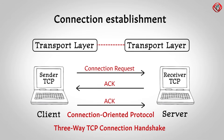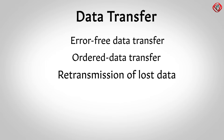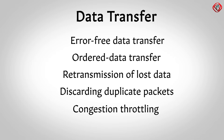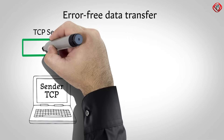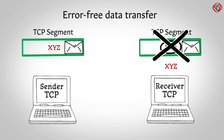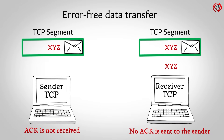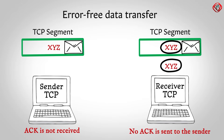Once the connection is established, the next phase is data transfer. During data transfer, TCP offers some key features which UDP does not provide, including Error-Free Data Transfer, Ordered Data Transfer, Retransmission of Lost Data, Discarding Duplicate Packets, and Congestion Throttling. Error-Free Data Transfer is provided by using the Checksum field. The sender calculates and enters a value in this field. At the receiving end, the receiver calculates the checksum value. If it does not match the value present in the checksum field, the TCP segment is discarded and no acknowledgement is sent to the sender. Because the sending side does not receive an acknowledgement, the segment is retransmitted. This time, the checksum value matches, meaning the TCP segment is correct and it is accepted. In this way, TCP helps with error-free data transfer.